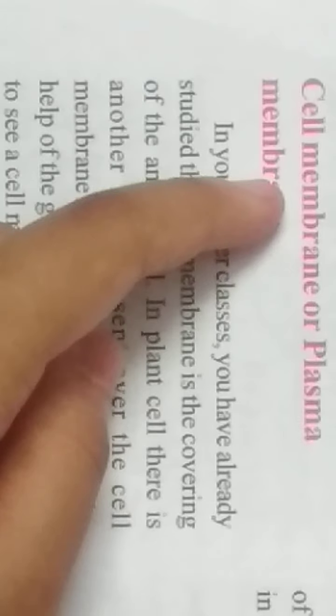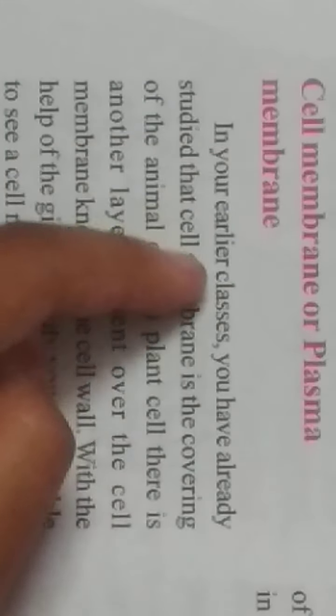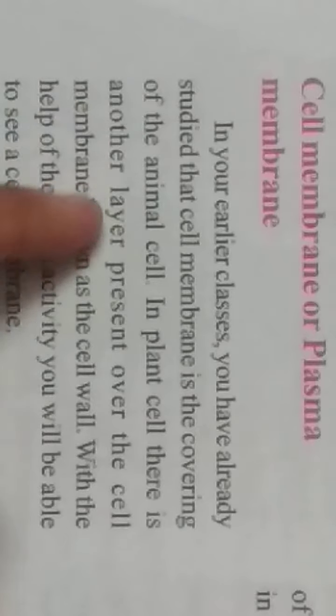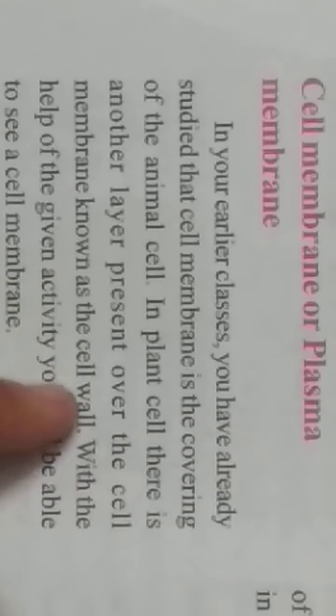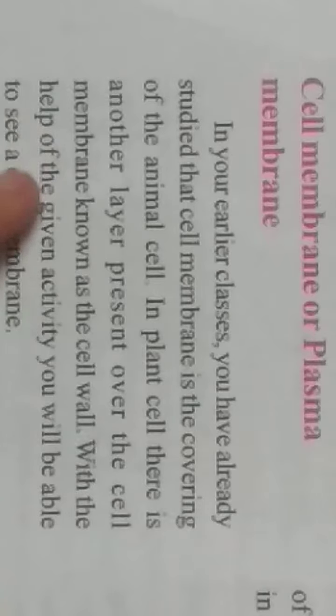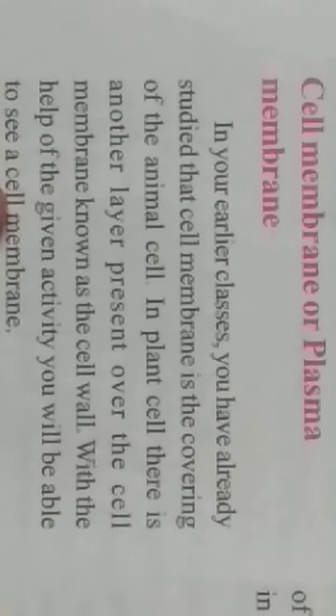Cell membrane, or plasma membrane: in your earlier classes you have already studied that the cell membrane is the covering of an animal cell. In a plant cell there is another layer present over the cell membrane, known as the cell wall. With the help of the given activity, you will be able to see a cell membrane.